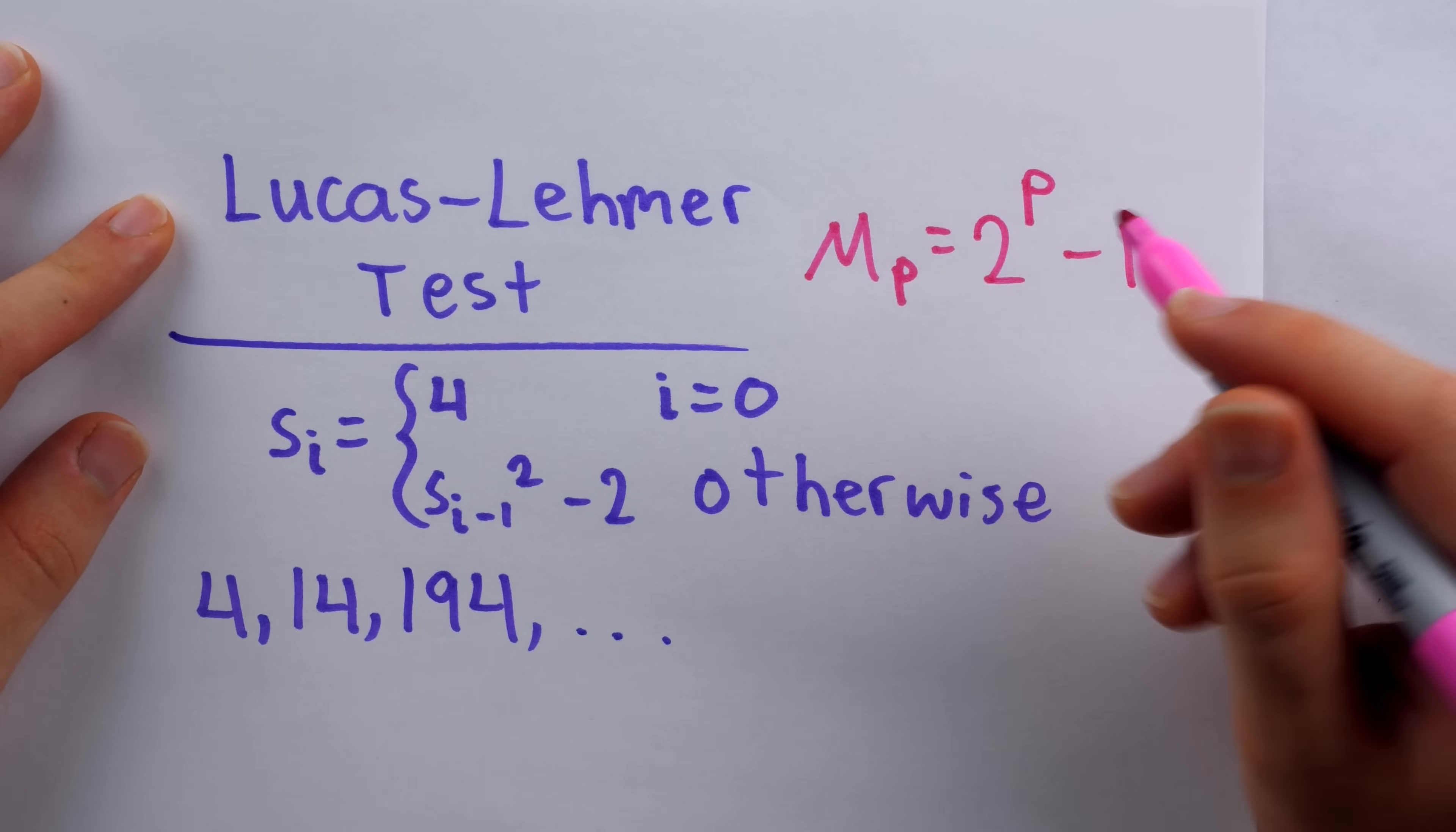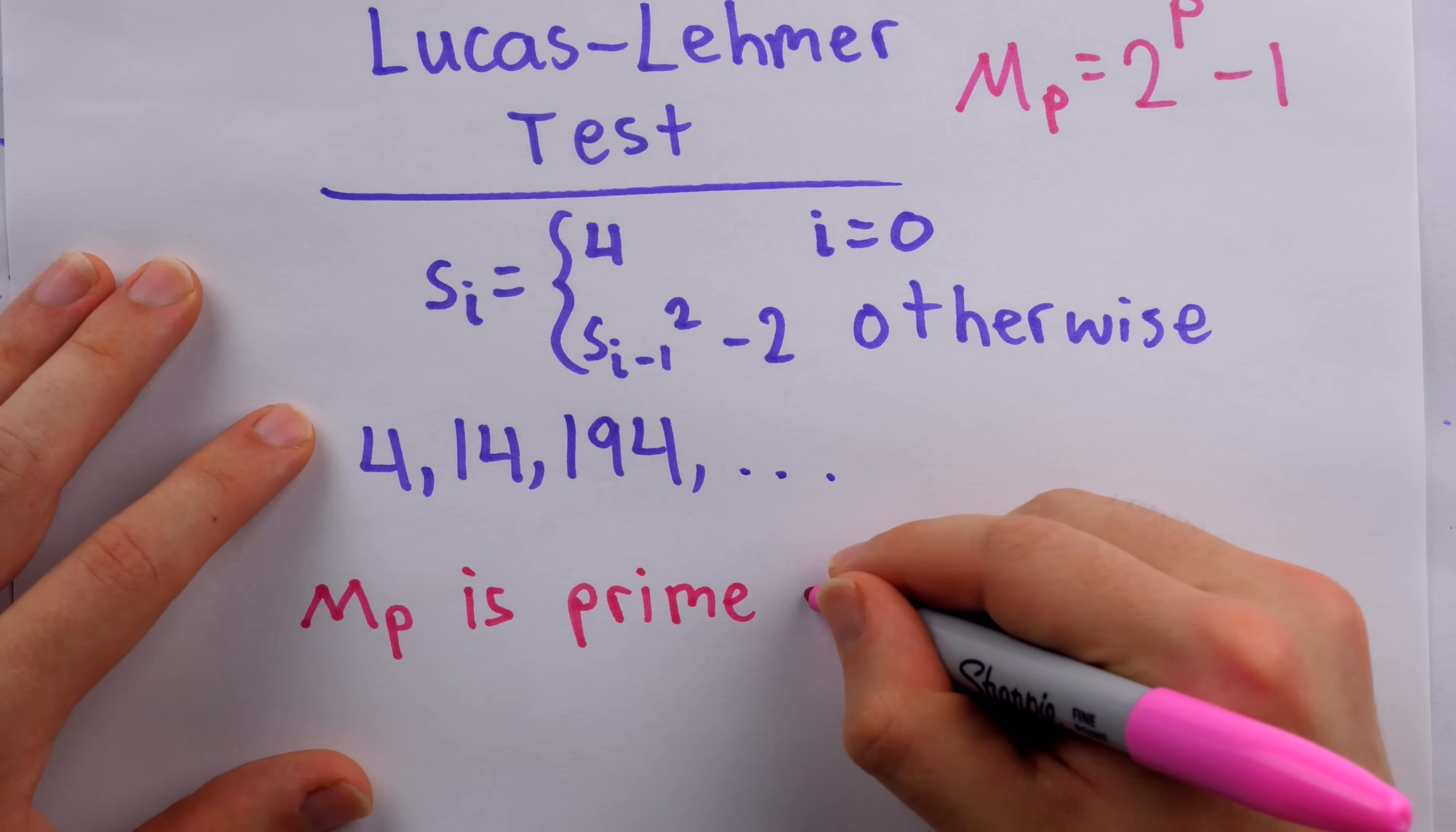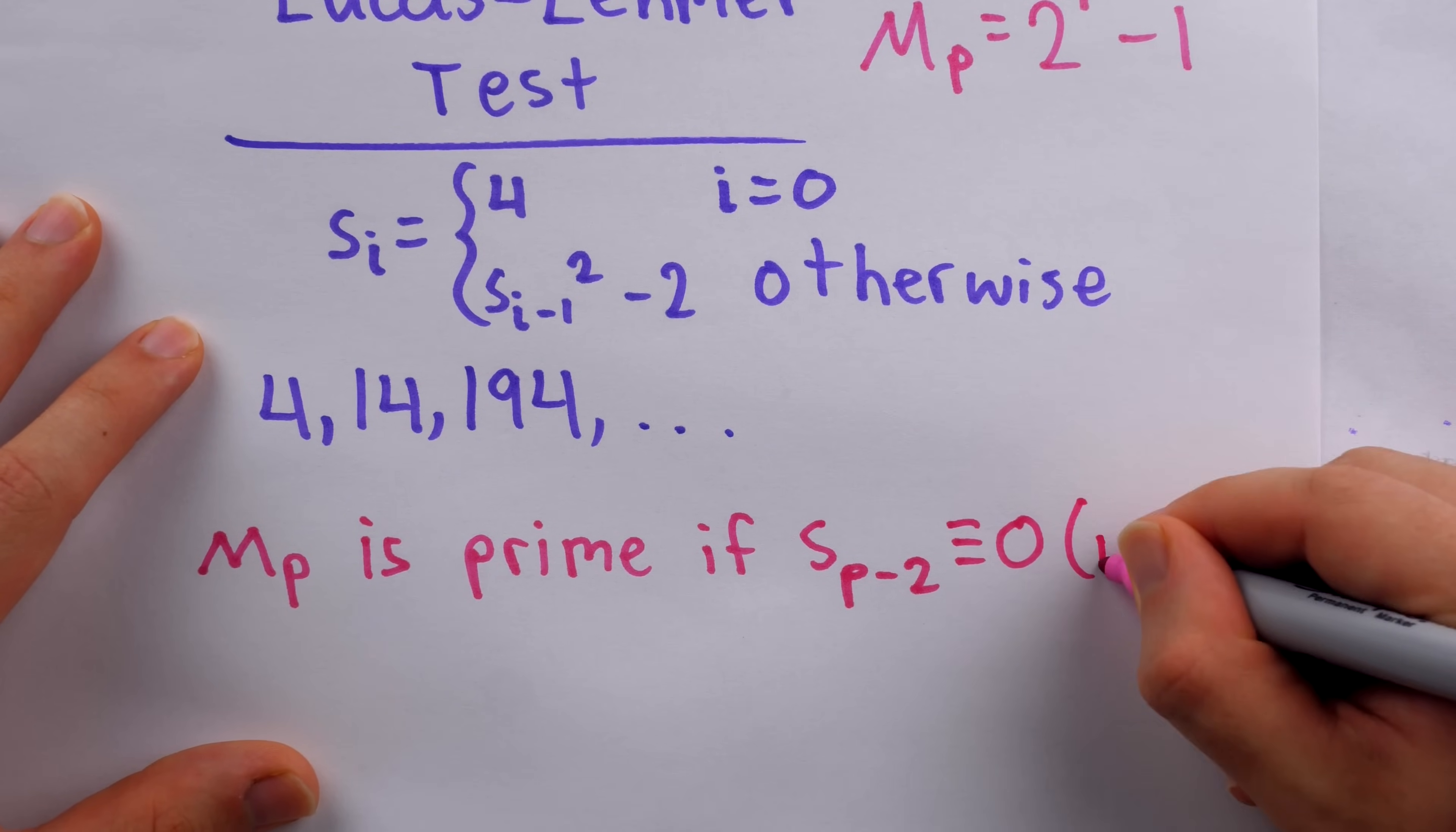And of course, this Mersenne number may or may not be prime. So then, how we use the test to reach a conclusion about whether or not M_p is prime is like this. M_p is guaranteed to be prime if the p minus two-th term of this sequence, so s_{p-2}, is a multiple of M_p, which would mean that it is congruent to zero mod M_p.